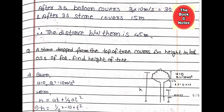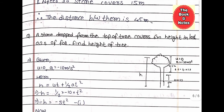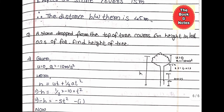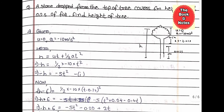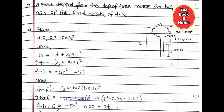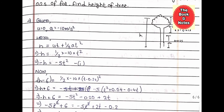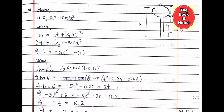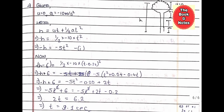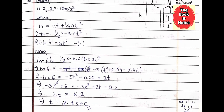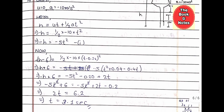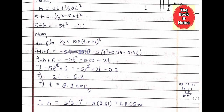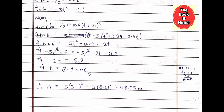A stone is dropped from the top of a tree and covers 6 meters in the last 0.2 seconds of its fall. Find the height of the tree. The solution is given — try to solve it yourself or take help from the solution. The height of the tree is 48.5 meters.